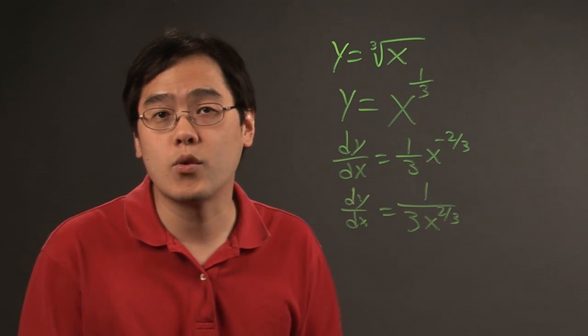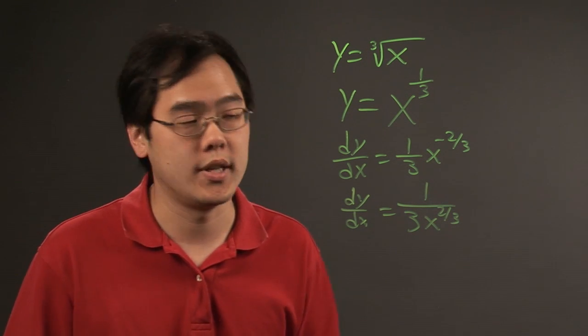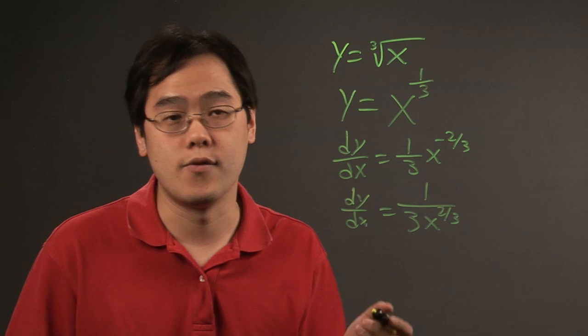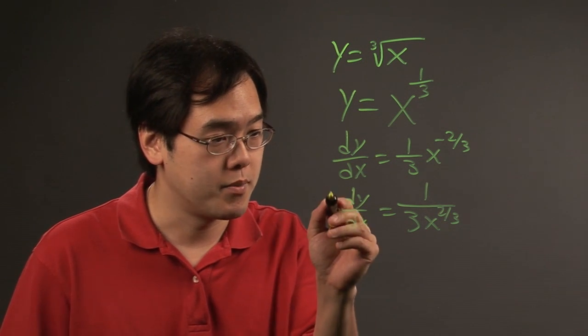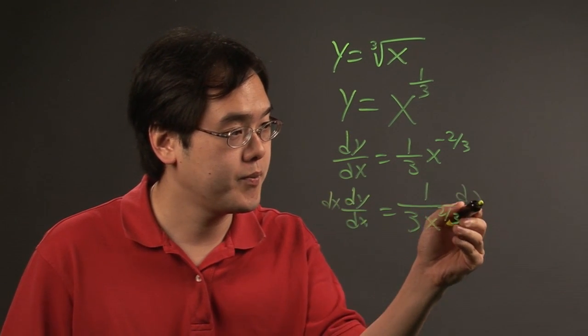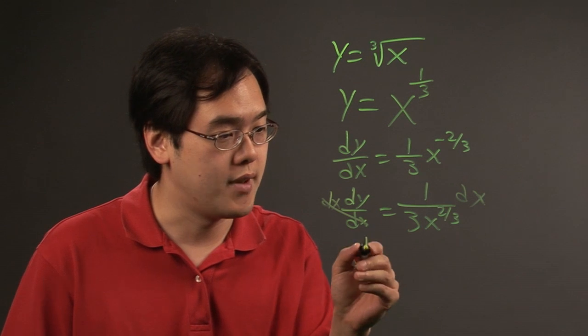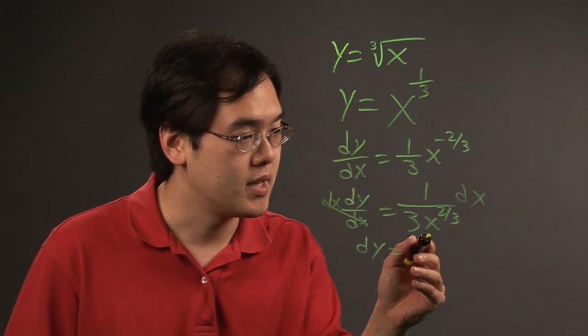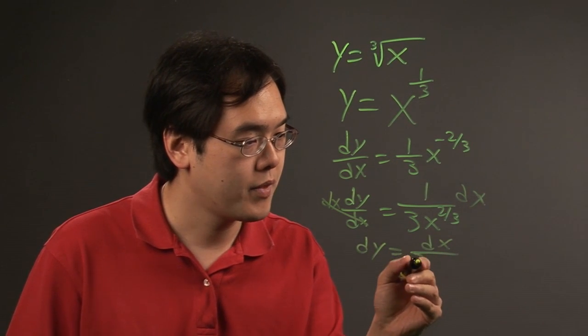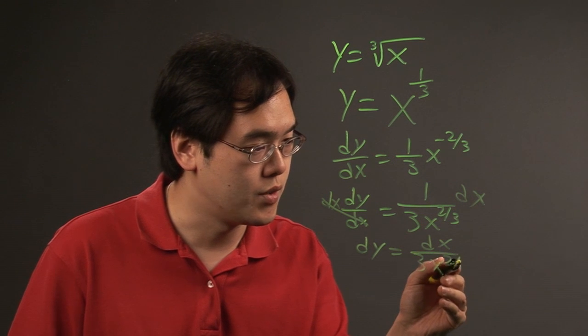At this point, if you want, you can rewrite it back in radical form, but it's completely up to you, but then you have to solve for dy. So, multiply both sides by dx. The dx's cancel. So, you have dy is equal to dx over 3x to the two-thirds.